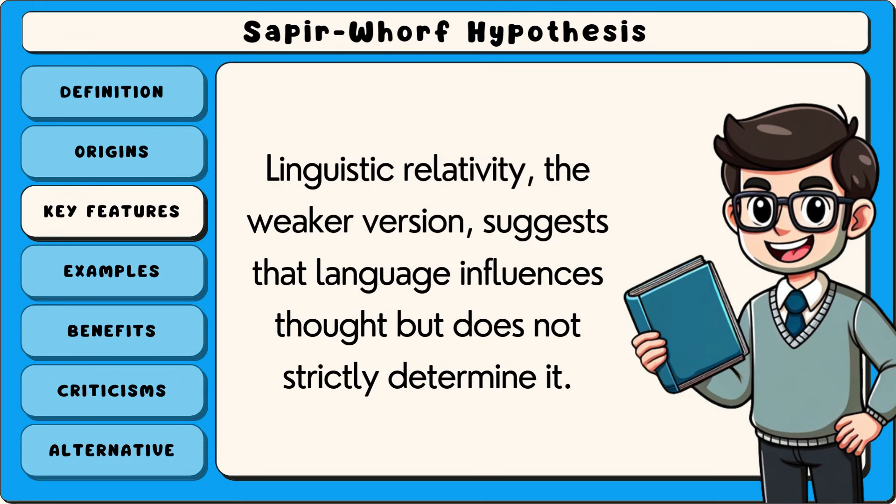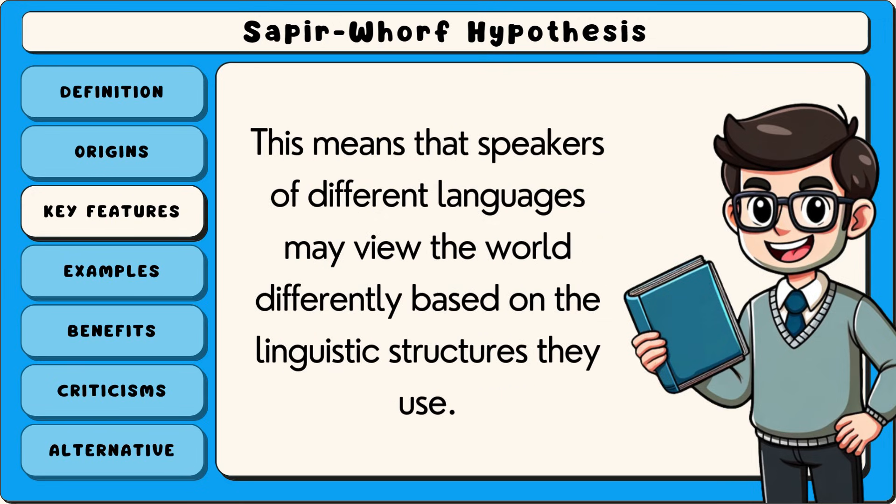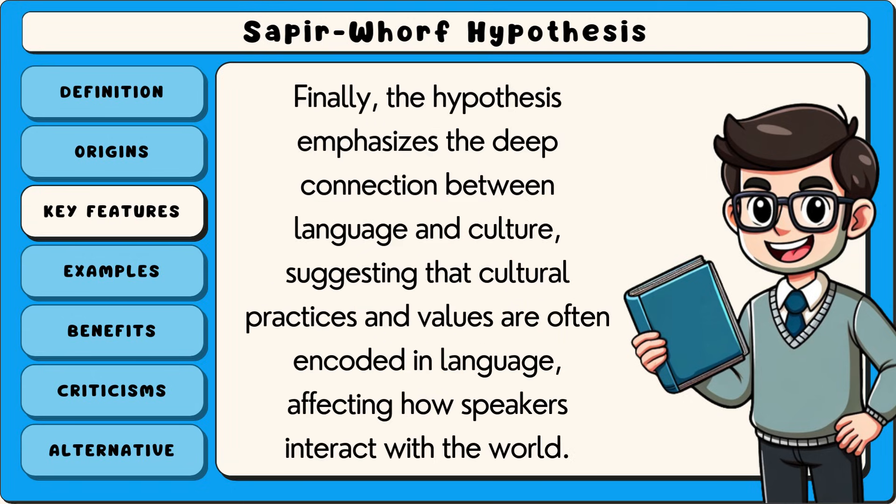Linguistic relativity, the weaker version, suggests that language influences thought but does not strictly determine it. This means that speakers of different languages may view the world differently based on the linguistic structures they use.